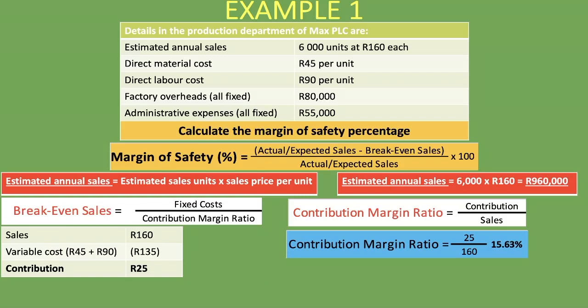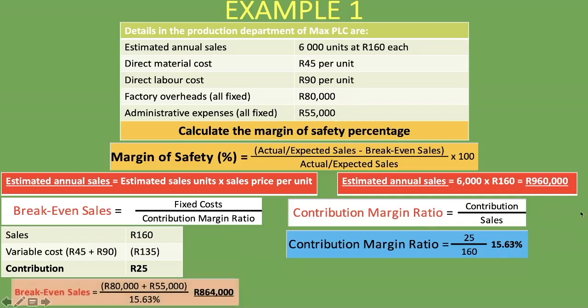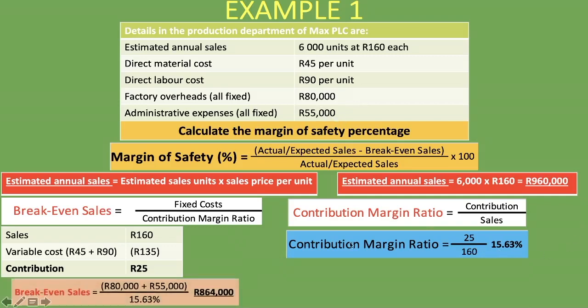Now that we have our contribution margin ratio of 15.63% and fixed costs of 80,000 plus 55,000 rand, we can calculate break-even sales. That is 80,000 plus 55,000 divided by 15.63%, which gives us break-even sales of 864,000 rand.